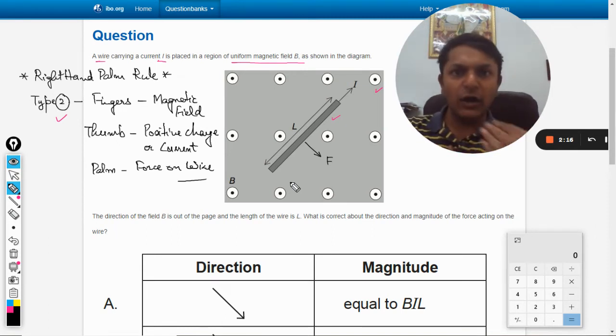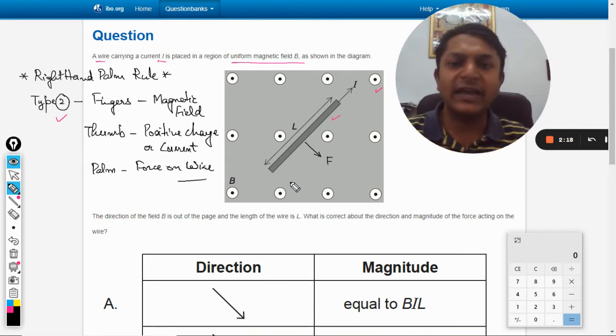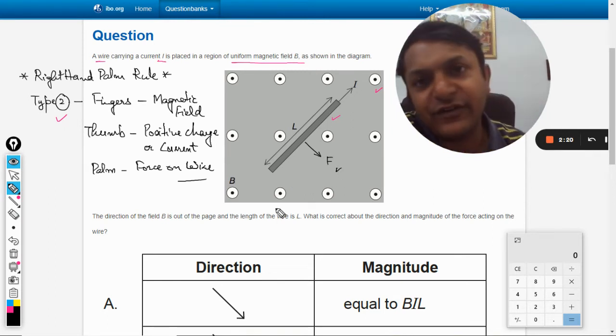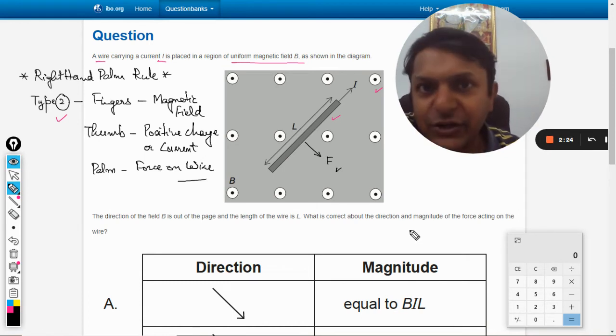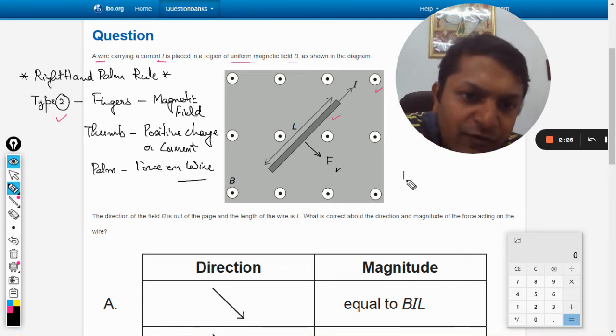And what will be the magnitude of that? We know that the formula for this is i into l cross b. This is the vector formation, and in scalar form it will be simple BiL sin theta.